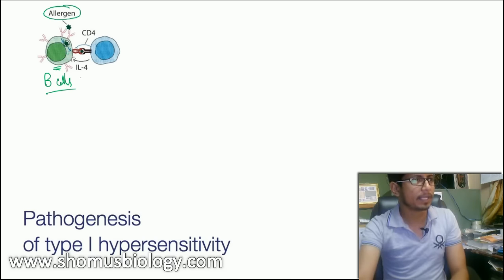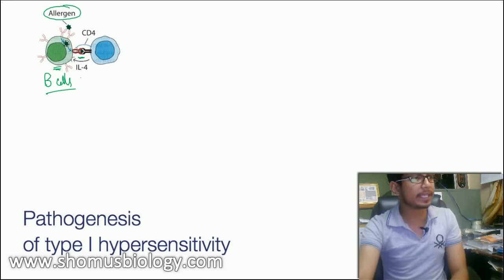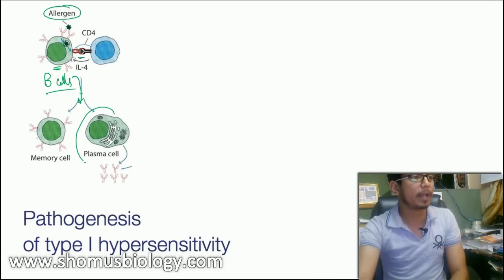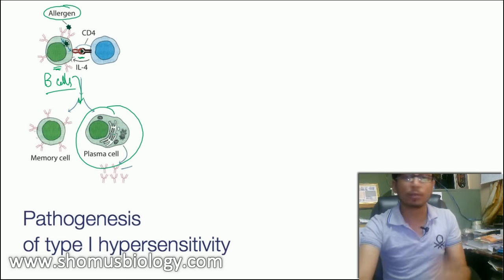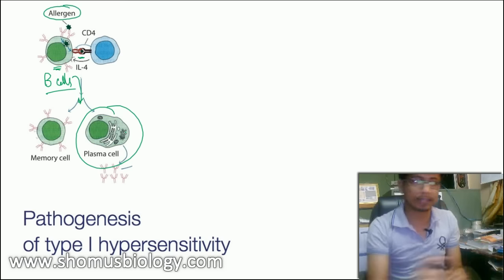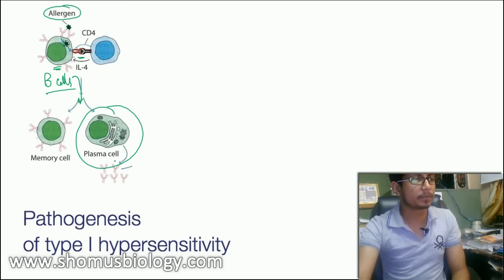That signal activates the B cell, which then engages in crosstalk with T helper cells. The T cell provides a signal to the B cell, fully activating it. Once activated, the B cell starts producing more and more plasma cells — modified B cells with more cytosolic components and a large capacity to produce proteins. These plasma cells are antibody-producing factories.